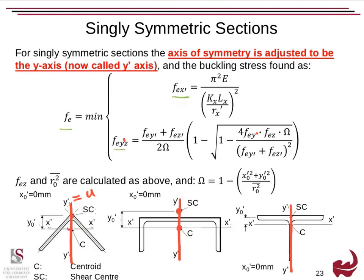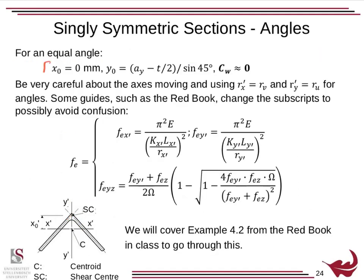Just as a note on shear center locations: for an equal angle, the shear center occurs halfway through the thickness — the distance to there is half the thickness in from the edge. For a channel, you'll find the shear center in the red book. Same thing with the T-beam — you'll find it at half the thickness. For singly symmetric angles, the warping stiffness CW is approximately zero. Some guides such as the red book change the subscripts to avoid confusion. We will cover a worked example — you can have a look at example 4.2 from the red book, which provides a good worked example on the design of compression elements.